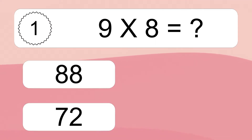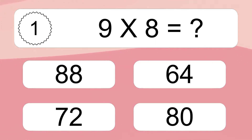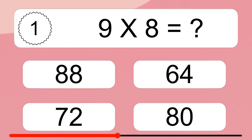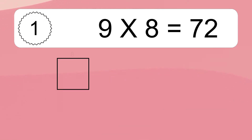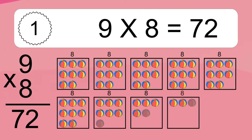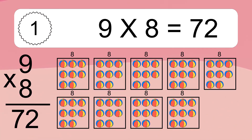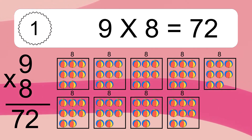9 times 8 equals what? 9 times 8 equals 72. We have 9 boxes, and each box has 8 colorful balls inside. If you count all the balls in all the boxes together, you will have 9 times 8 balls. This equals 72 balls.